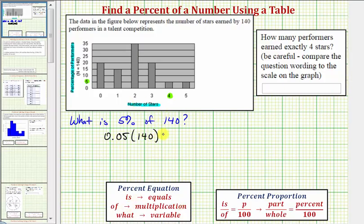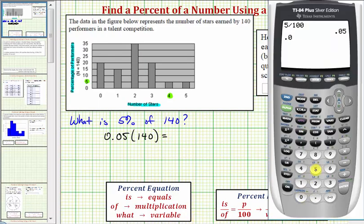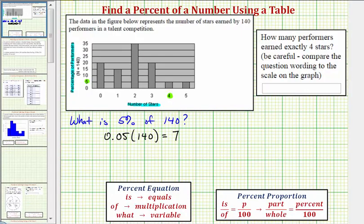This product will give us five percent of 140. So 0.05 times 140 equals seven, which means seven performers earned four stars.